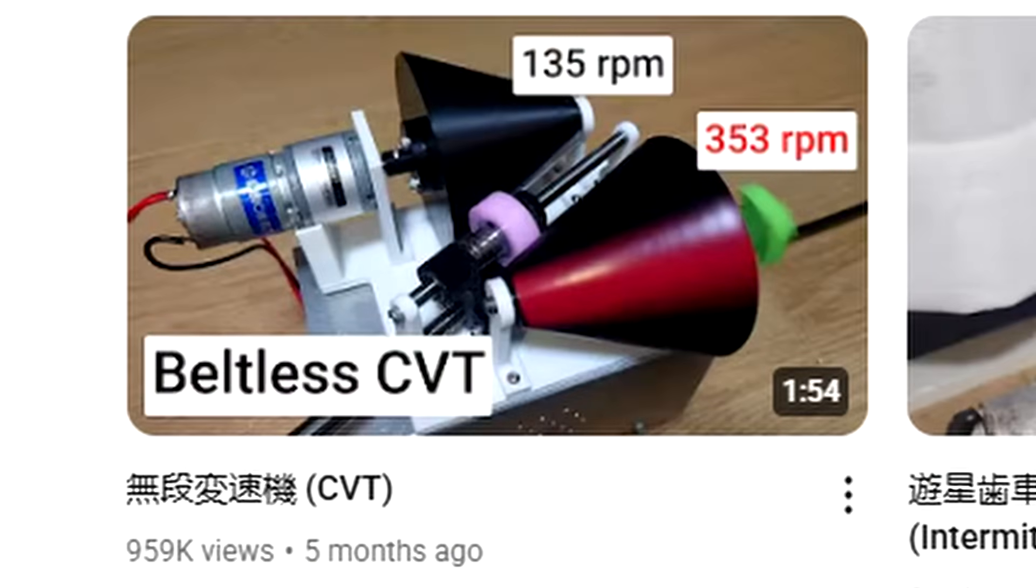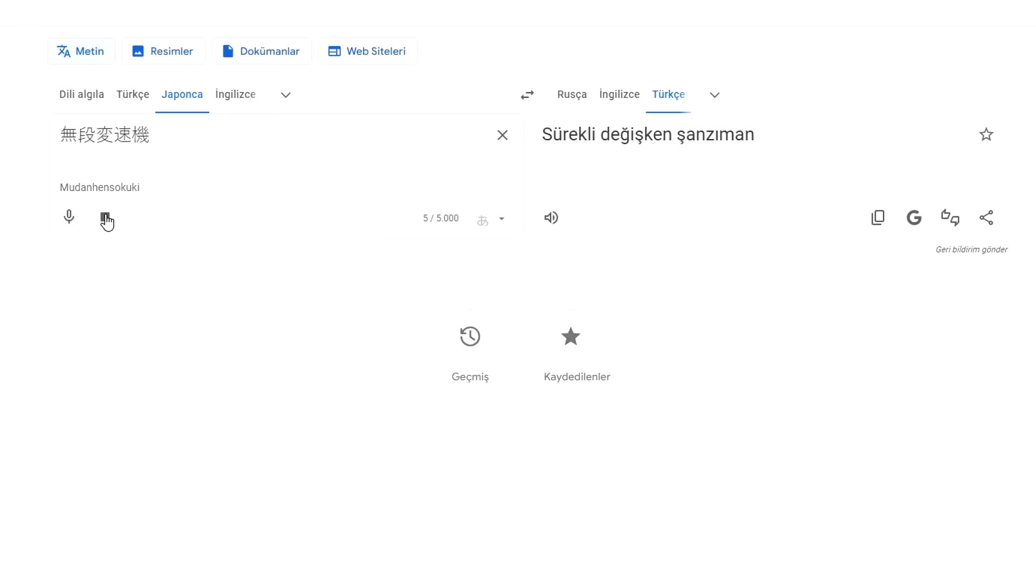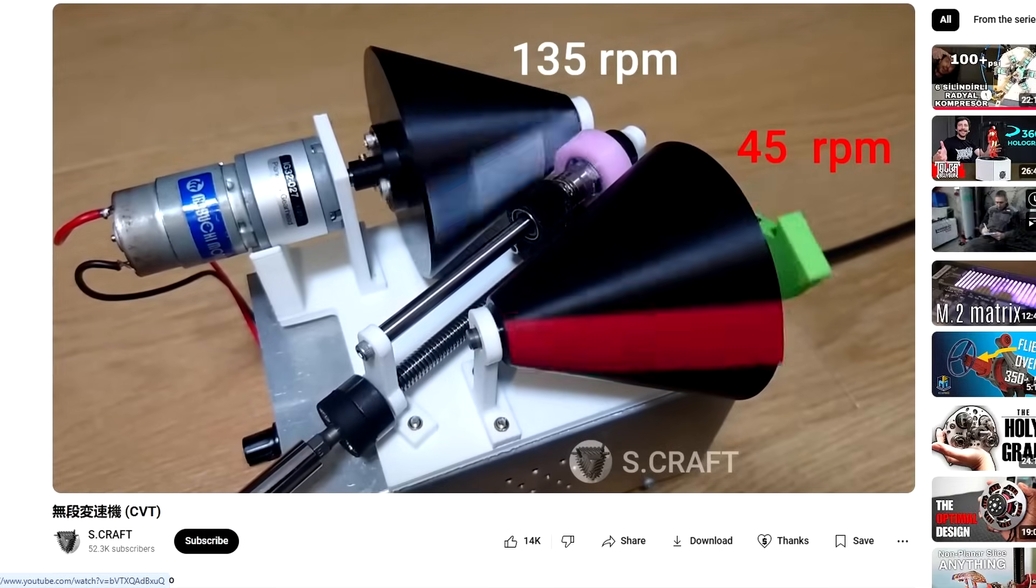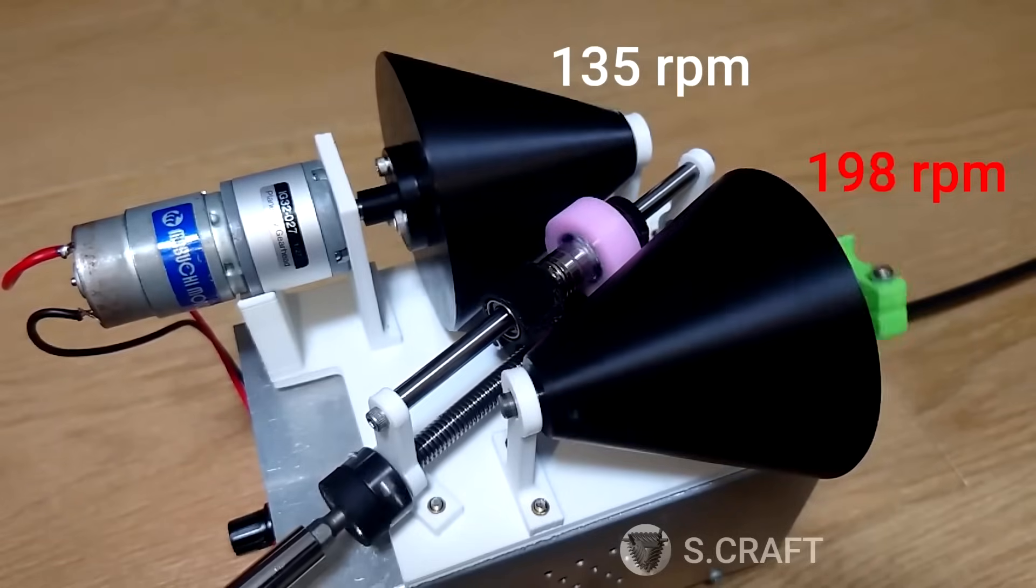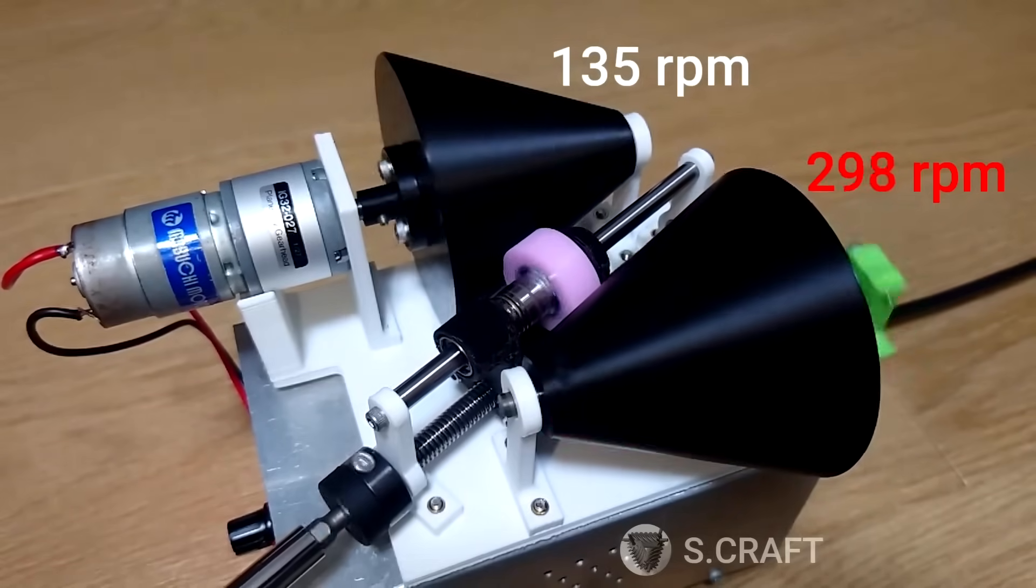While browsing YouTube, I saw a video titled Mudan Hensokki with CVT in parentheses, and of course I clicked it. Someone made a beltless CVT that transmits power using a wheel spinning between two cones instead of a belt. It looks amazing, I want one.